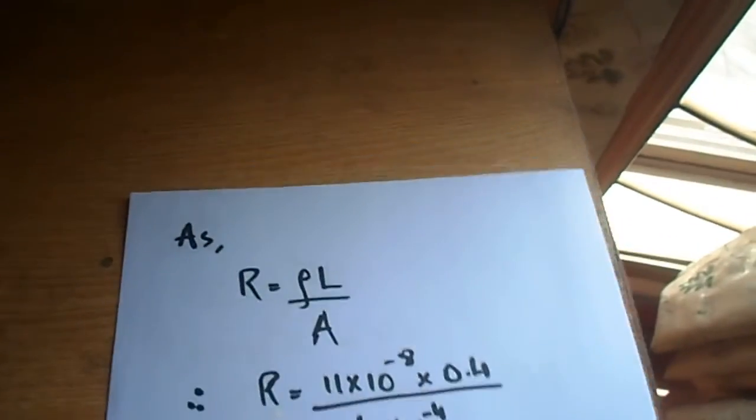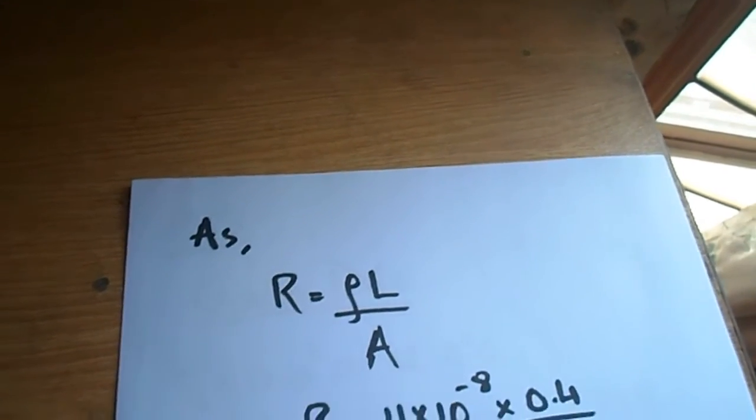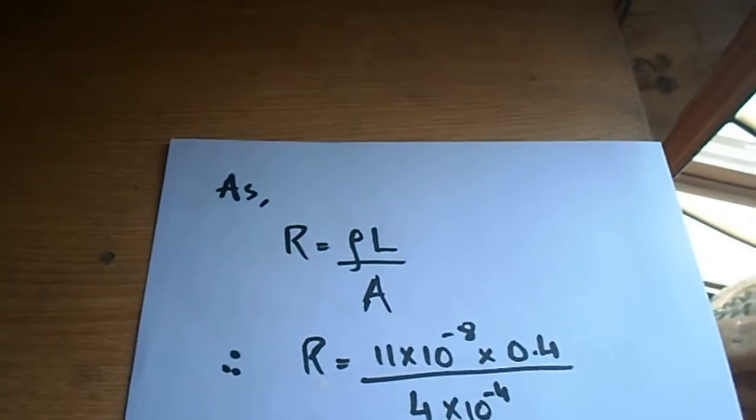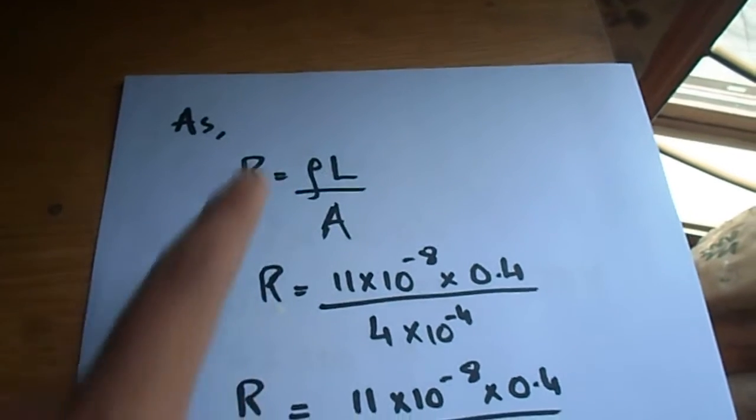So this question is quite simple because there is simply one formula. Any resistance is equal to resistivity multiplied by length divided by area. R is equal to rho L divided by A. We will insert values in this formula.